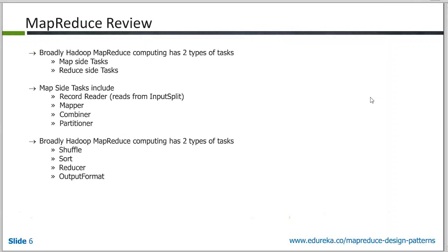Now let's understand these things a little bit in detail. For some of you it's just a repetition, but just to put the context here, I'm going to explain a little bit about these. The record reader is responsible for reading from the input split. What the record reader reads is bytes, and it is responsible for dividing those bytes along records. That's the input which the mapper gets.